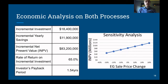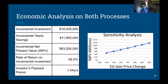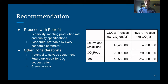Here is a summary of the important parameters from our analysis. The incremental investment — comprising fixed capital investment and working capital — totaled $18.4 million. The incremental yearly savings, which is the difference between the revenue generated from ethylene glycol and the differential cost of manufacturing, resulted in $11.9 million per year. From these values, we calculated an incremental net present value of $83.2 million, a rate of return on the incremental investment of 65 percent, and an investor's payback period of 1.54 years. The diagram on the right shows the sensitivity of the NPV against the ethylene glycol sale price; notably, a 10% change in sales price results in roughly a $10 million change in incremental NPV.